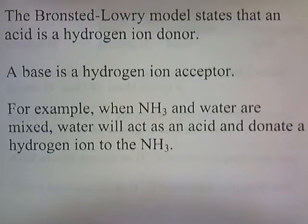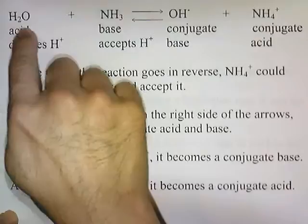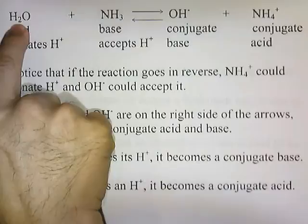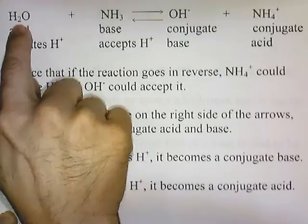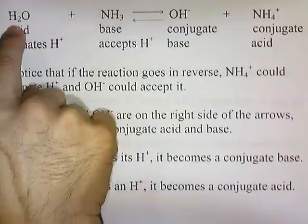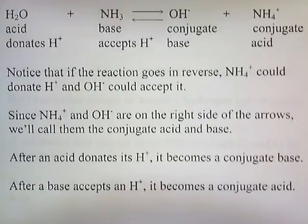For example, when NH3 and water are mixed, water acts as an acid and donates a hydrogen ion to the NH3. One of the Hs in H2O is donated to NH3 as H+. The NH3 accepts it and turns into NH4+. After H2O loses the H, it becomes OH-.